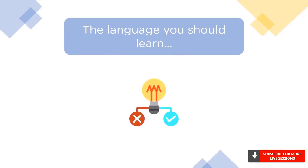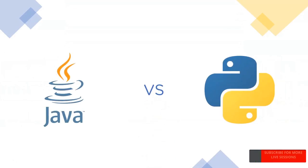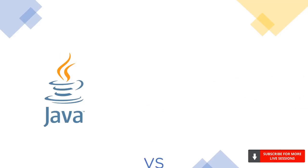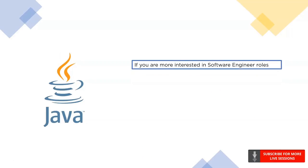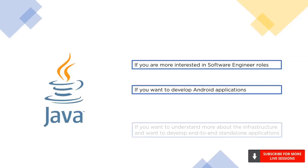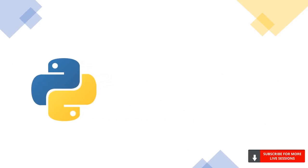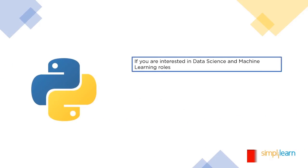Now let's conclude which programming language is suitable depending on your requirements. Choose Java if you're more into software engineering roles and want to handle systems for large corporations. Java is extensively used for developing Android applications, so if you want to build an Android app, Java should be your clear choice. Java is also suitable for building standalone end-to-end software that runs on PCs.